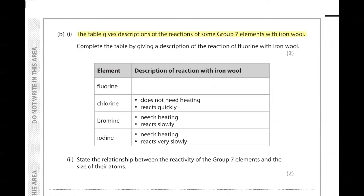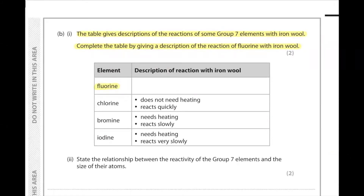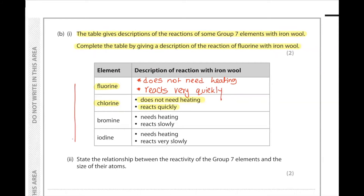Part b1: the table gives descriptions of the reactions of some group seven elements with iron wool. Complete the table for fluorine. Looking at chlorine, we can see it does not need heating and reacts quickly. Fluorine is even more reactive than chlorine, so it will not require any heating and will react very quickly. This follows from fluorine being the most reactive in group seven and iodine being the least reactive.